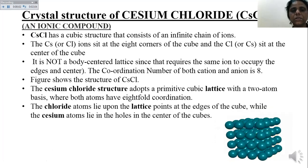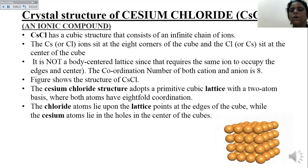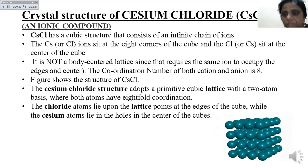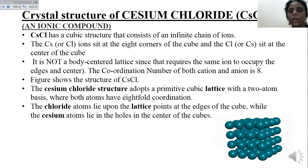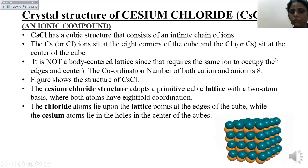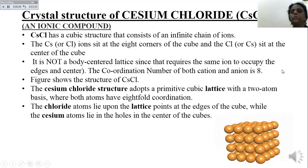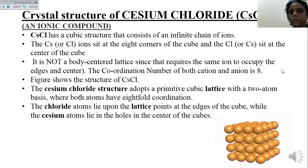Next is the crystal structure of cesium chloride. Cesium chloride is also a cubic structure, which is neither simple cubic nor face-centered - it is a body-centered cubic lattice. Body-centered means eight particles at the eight corners and one particle at its body center. It has a cubic structure consisting of an infinite chain of ions. The Cs or Cl ions sit at the eight corners of the cube and the other ion is at the center.